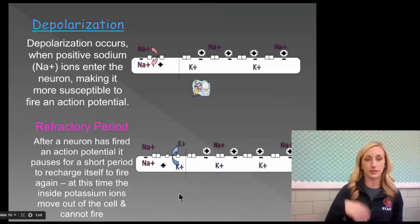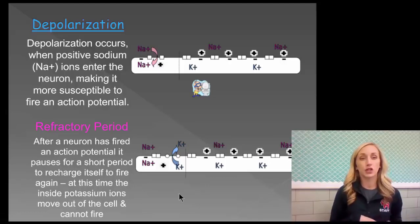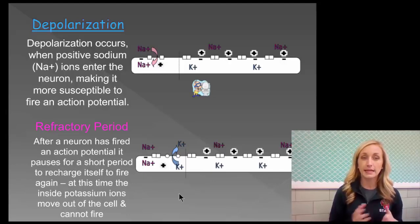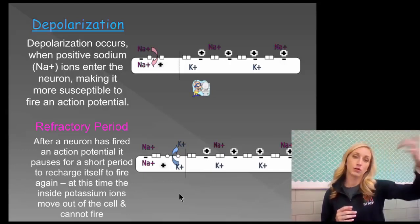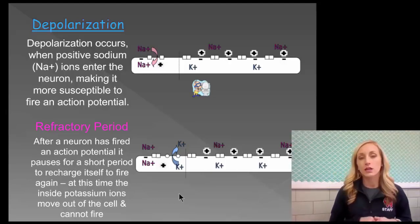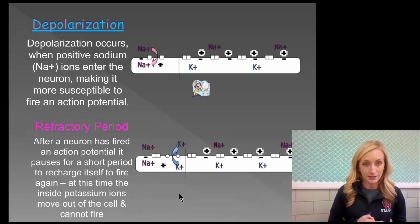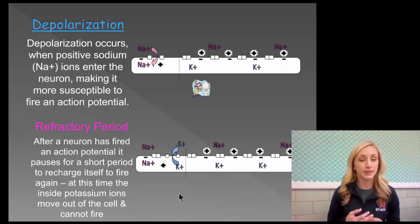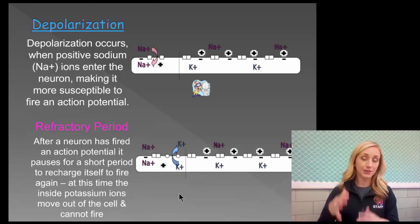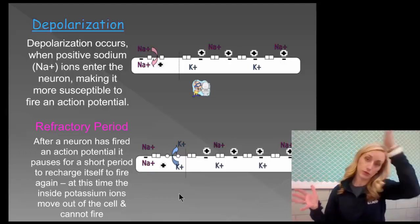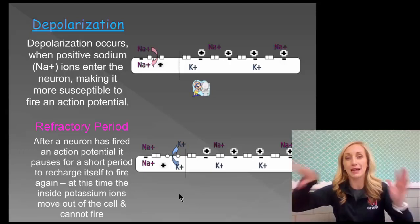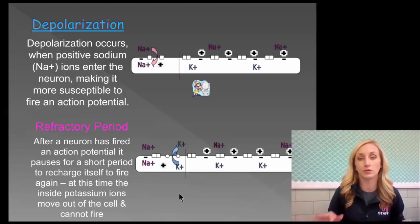Depolarization occurs when positive sodium ions enter the neuron, making it more susceptible to fire an action potential. Sodium rushes in and causes depolarization. The refractory period occurs after a neuron has fired an action potential — it pauses for a short period to recharge itself to fire again. During this time, the inside potassium ions move out of the cell, and the neuron can't fire again until sodium goes out and potassium comes back in — essentially returning to homeostasis.